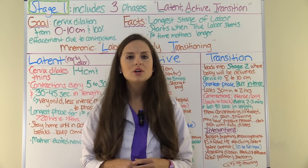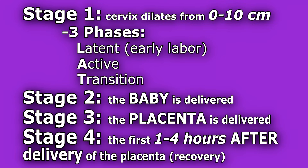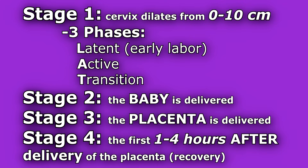Let's go over the four stages of labor. Stage one is where the cervix dilates from zero to ten centimeters, and this stage has three phases known as the latent — also sometimes called early labor — active, and transition. Stage two is where the baby will be delivered. Stage three is delivery of the placenta. And stage four is the first one to four hours after the delivery of the placenta.